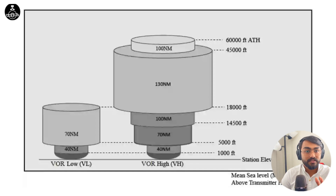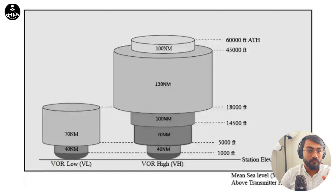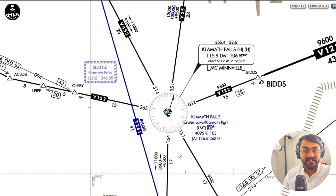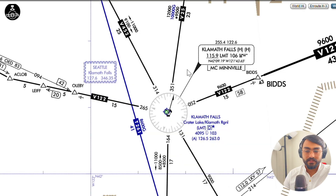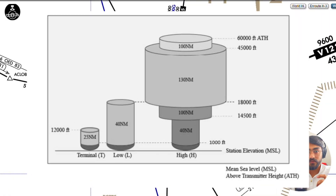We'll use an example to understand how to distinguish between these service volumes. It is important to know service volumes because it tells us how far we can reliably receive the VOR signals and use them for instrument navigation. The first example is LMT — the LMT VORTAC has a frequency of 115.9, and you can see there's an H written next to Klamath Falls, meaning it is a high service volume.